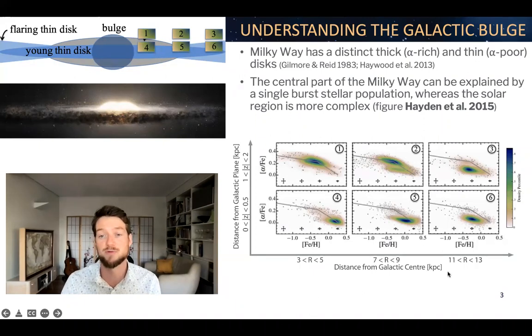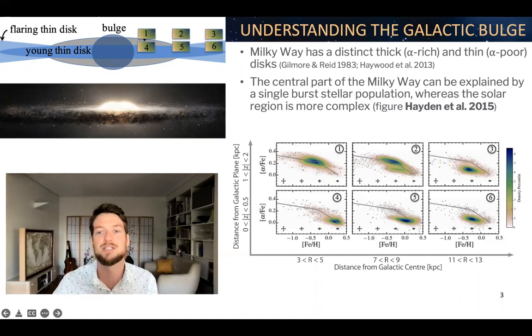As a function of the distance from the galactic center shown horizontally here versus the distance off the galactic plane, you're seeing a variety of different stellar populations. Towards the central parts, you're actually seeing that this alpha-iron versus metallicity can be explained by a single population. But things get a lot more complex if you go out to the solar neighborhood shown here in panels 2 and 5. Here we're seeing that classic alpha-rich and alpha-poor distribution, which is very hard to explain by a single event.